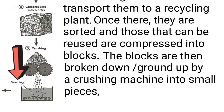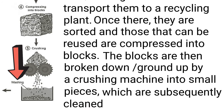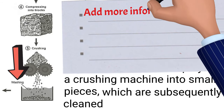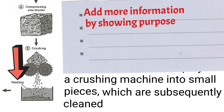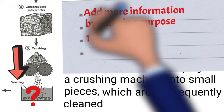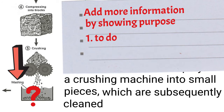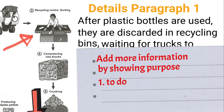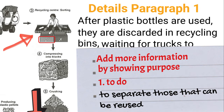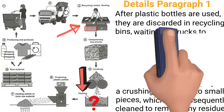Now let's add the washing step: 'which are subsequently cleaned.' If you have trouble reaching 150 words, you can add more information by showing the purpose of a certain step. The purpose of washing is to remove the residue: 'which are subsequently cleaned to remove any residue.' For example, going back to step 2 — the purpose of sorting is to separate those bottles that can be reused: 'Once there, they are sorted to separate those that can be reused, which are then compressed into blocks.' This is the entire details paragraph 1.